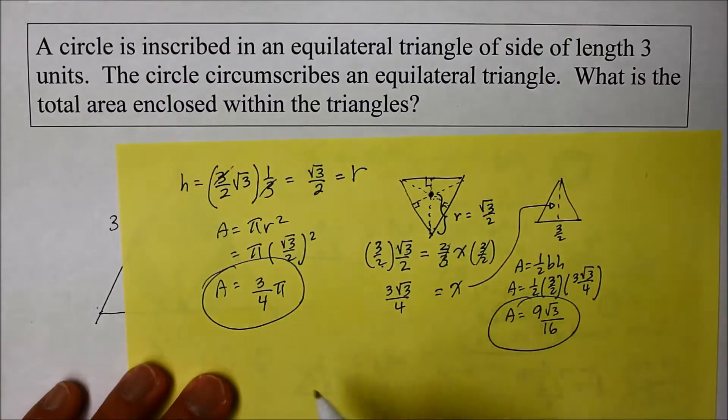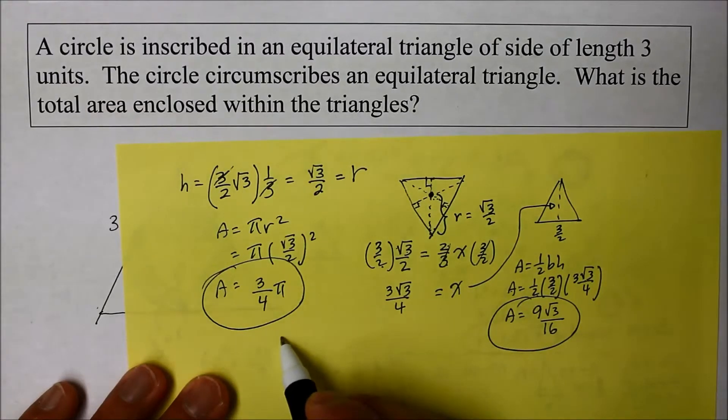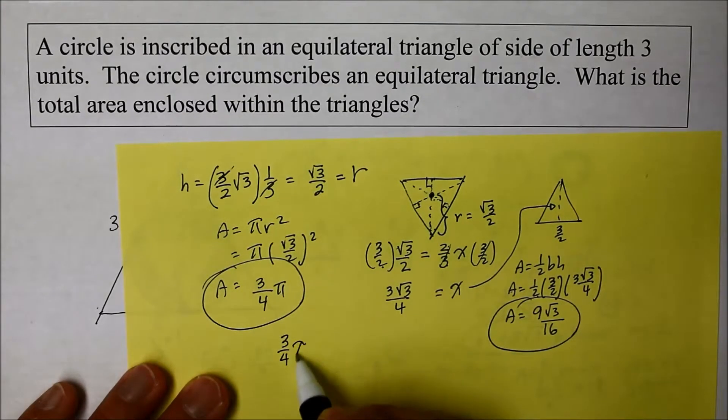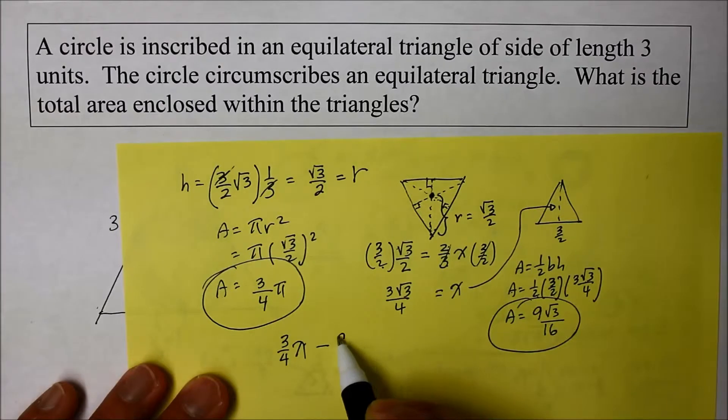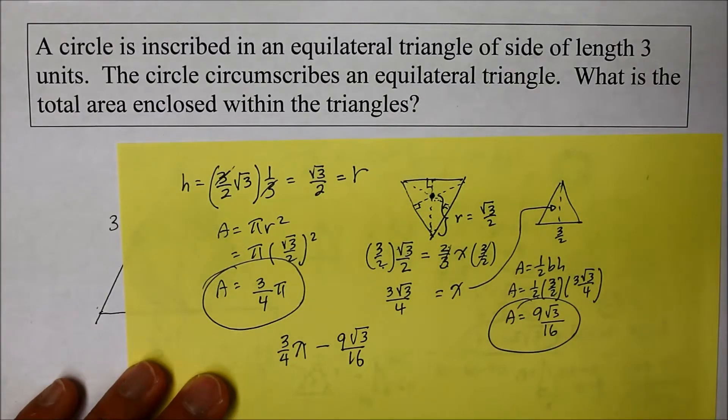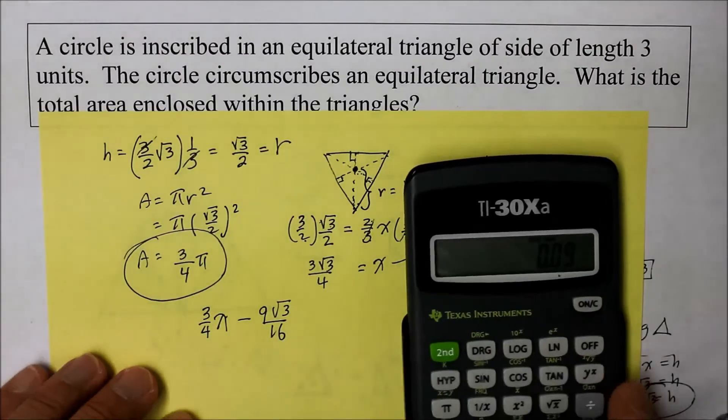So how do you do this? So we go 3 fourth pi minus 9 square root of 3 over 16. Thank goodness for calculators, huh? I hope you have one.